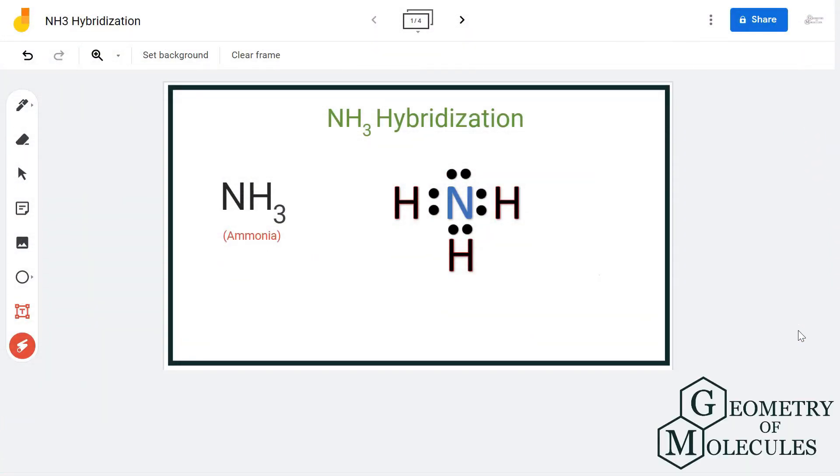Hi guys, today in this video we are going to look at the hybridization for NH3 molecule. It's the chemical formula for ammonia. To understand the hybridization, we will go through its Lewis structure and the steric number.